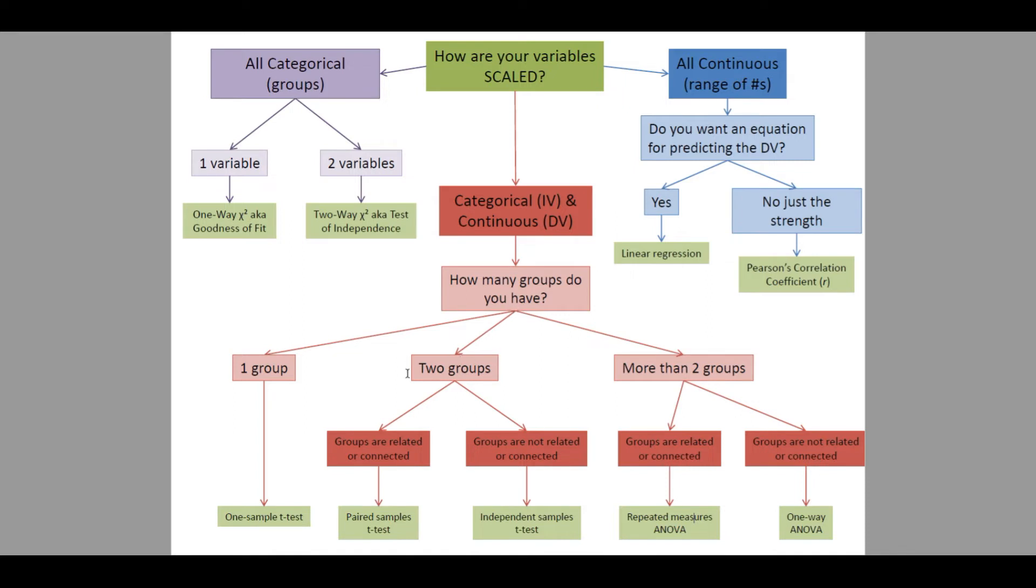If we have two groups or samples that we're comparing, we want to ask the question, are those groups related in some way? For example, are we sampling the same group of people twice? Or are those samples connected in some way? For example, mothers and children or spouses? Or are they not connected or related in any way? For example, a study where people have been randomly assigned to two different groups.